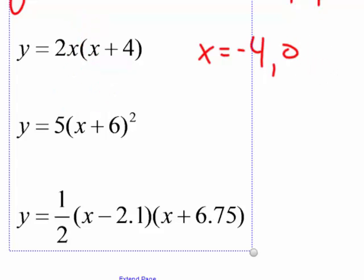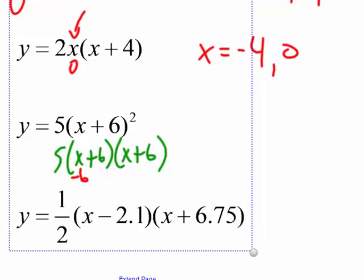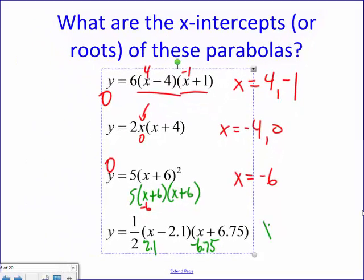So if the variable, if the x is out front, just know that it's always 0 there. How about this next guy? Well, this is really 5 times (x plus 6) times (x plus 6). So there's really only going to be one solution for my x. There's only going to be one root. So that would be negative 6. How would I get the whole thing to be 0? Plug in negative 6 for x. And in the end, still nice and easy. What would I put in for x? 2.1. What would I put in for x over here? Negative 6.75 to make that whole thing 0.